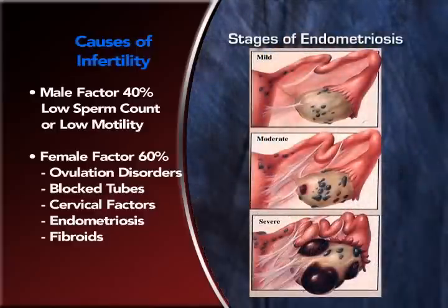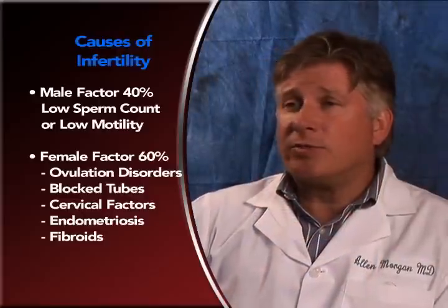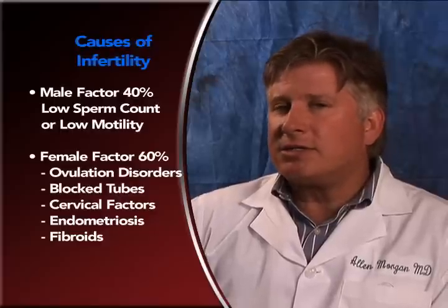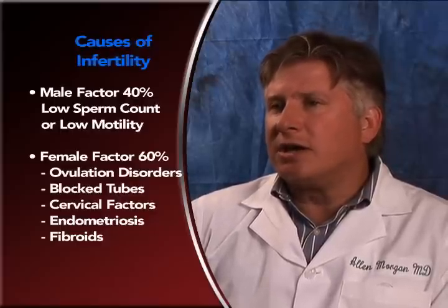Another cause is endometriosis — small growths on the outside of the uterus from tissue that normally lines the inside. That lining somehow sheds and starts to grow internally. Some women feel pain with that, some don't, but it accounts for about 5 to 10% of infertility cases.